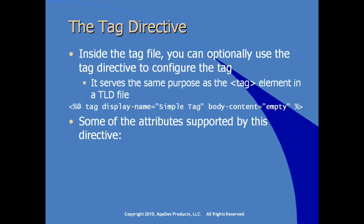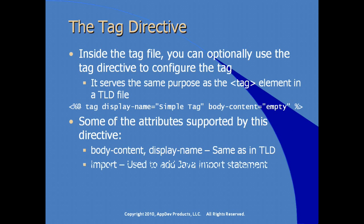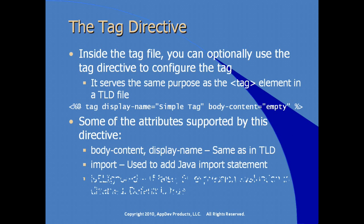Some of the attributes supported for the tag directive include display name and body content, same as in the tag library descriptor. There's also an import attribute used to do a Java import. IsEL ignored works with the expression language — if set to false, any expression language expression evaluation is disabled. The default is to set this to true.